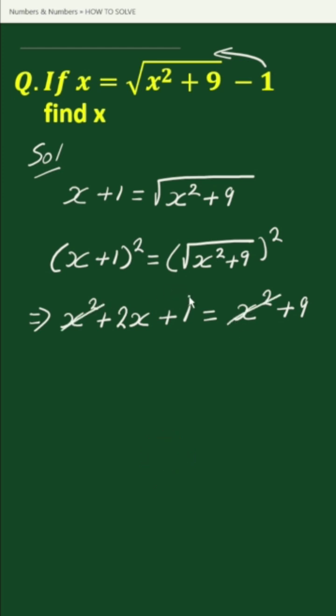Now transposing 1 to the right hand side, we can write this as 2x equals 9 minus 1 equals 8.